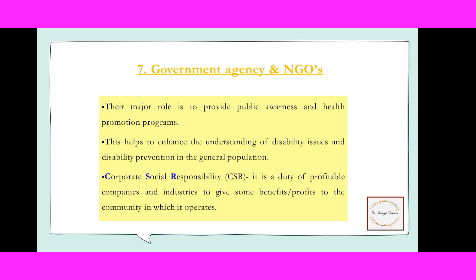The seventh stakeholder is the government agency and NGO. Their major role is to provide public awareness and health promotion programs. CBR requires funding, promotion, public awareness and inter-community outreach — and government and NGO policies help with all of this. This also helps enhance understanding of disability issues and disability prevention in the general population. Additionally, CSR — Corporate Social Responsibility — requires profitable companies and industries to contribute a percentage of their profit towards such social causes. This is the social responsibility of the corporate sector.